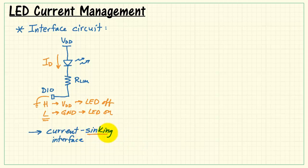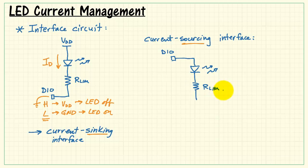There's a second version that's called the current sourcing interface. And we simply interchange the position of the DIO and the power supply connection. In this case, the DIO connects to the LED. We have our limiting resistor in series, and then we connect the other side to ground. In this case, we raise the output to the high state to make the LED turn on. Set to the high state to turn the LED on, set to the low state to turn the LED off.